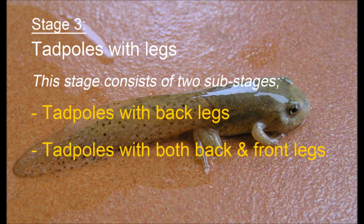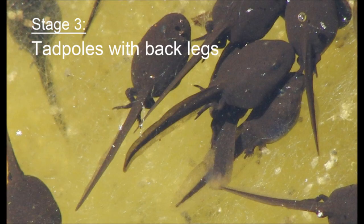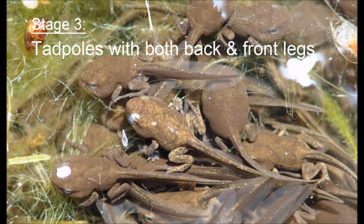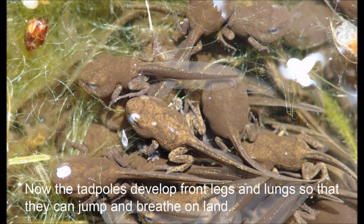Stage three: tadpoles with legs. This stage consists of two sub-stages — tadpoles with back legs, and tadpoles with both back and front legs. As tadpoles grow, they shed their skin and develop back legs and jaws. They eat algae and other small water creatures.